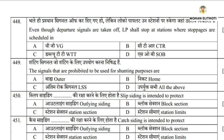Question 448: even though departure signals are taken off, the locopilot shall stop at stations where stoppages are scheduled. Even if departure signals are taken off and the train is ready to depart, the LP must still stop at scheduled stations.